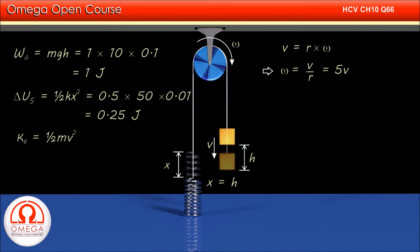The kinetic energy of the block is ½mv² = 0.5 × 1 × v² = 0.5v².